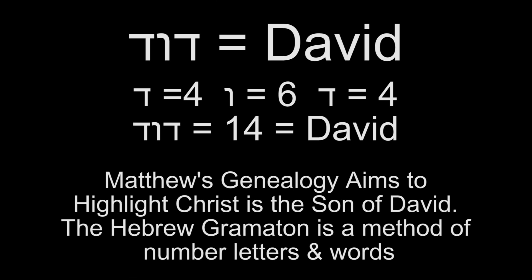They kept it to 14 because 14 represents something beautiful — it's two times seven. The number 14 being used so frequently in the genealogy is very deliberate. David, when you add up the numbers that make up his name in Hebrew, you get 14. As a result, 14 is linked to David, and they're trying to prove in the book of Matthew that Jesus is the son of David.